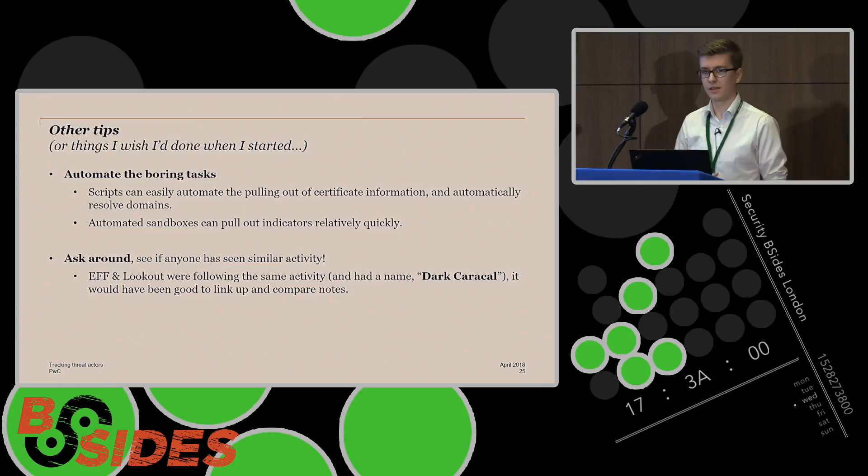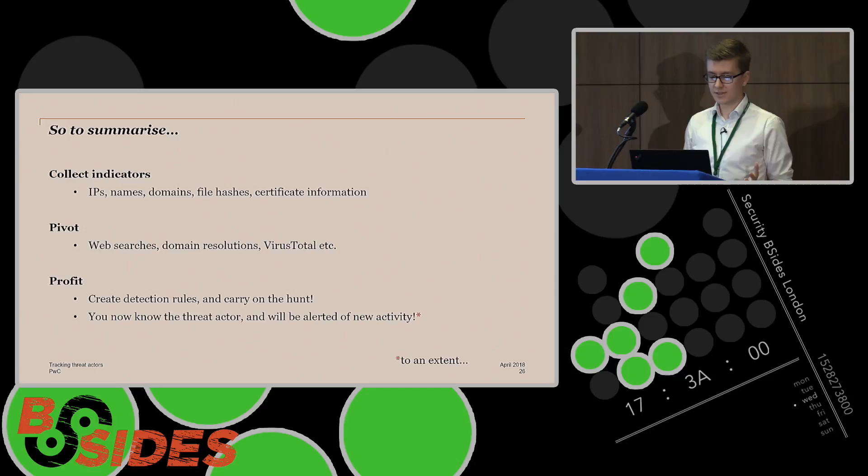Little tips and things I wish I'd done when I started is that you've got to automate the boring tasks. At the start I was doing this all manually throwing it into virtual machines. But automatic sandboxes can do this quite quickly and also scripts can be used to pull out the certificate information as well. And also ask around. So there was a report that was released about this at the same time as I was tracking it. So it would have been nice to have connected with the people who were researching it ahead of time and we could have compared notes. A lot of the time when you're doing this you won't realize that it's quite widespread. You might be looking at all this and thinking why is no one looking at it when really they are just behind the scenes. So it's good to reach out.